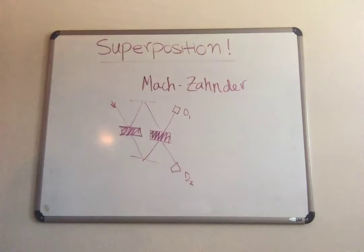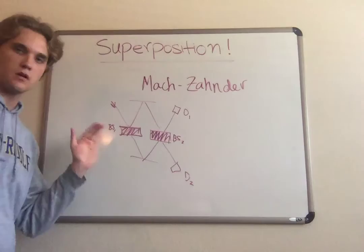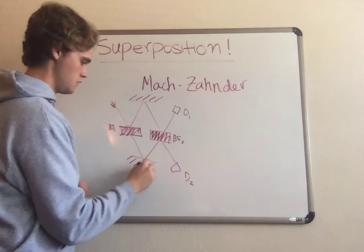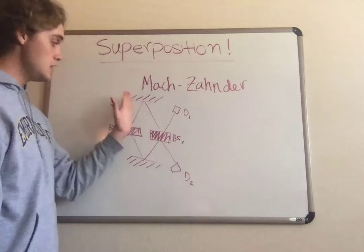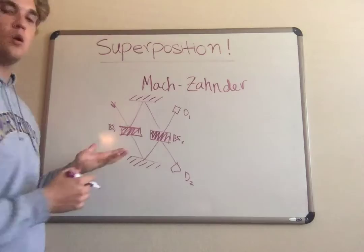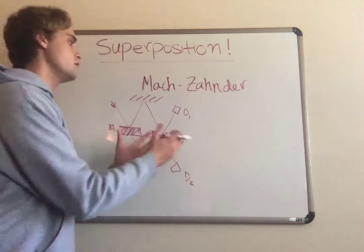Light comes in, hits the first beam splitter - half of the beam goes up, half the beam goes through, bounces off the mirrors, comes back to the second beam splitter. Half of each beam goes through and the other half bounces off. If you tweak things like polarization and different aspects of the incoming beam, you can get destructive and constructive interference so that you only receive a signal in one of the two detectors.